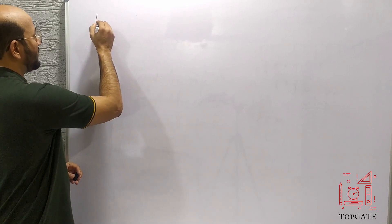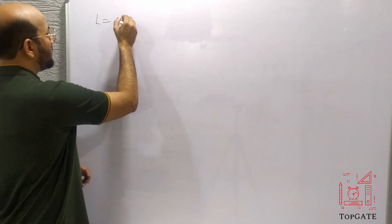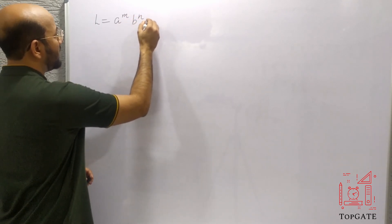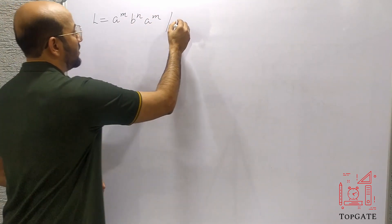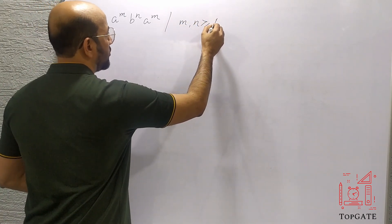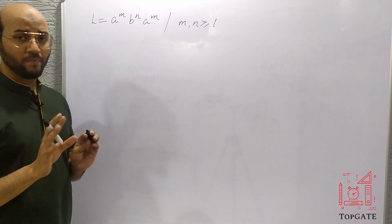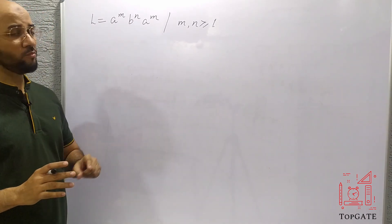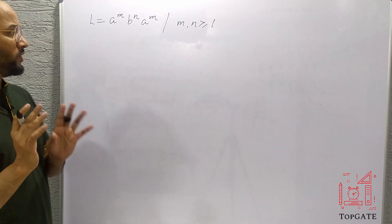We have to design a PDA for L equal to A to the power M, B to the power N, A to the power M, where the value of M and N is greater than or equal to 1. The values of M and N are independent, and both must be at least 1, not 0.